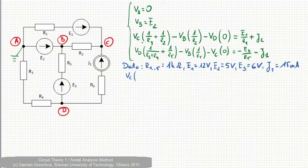So, Vc times 1 over R1 plus 1 over R2 is 2 mS minus VB is E2. It means we have 5 times 1 mS. The right hand side is E1 over R1,